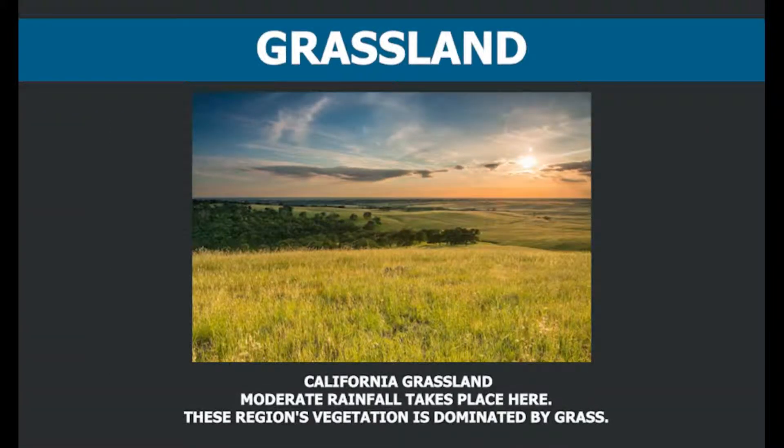There are areas on Earth where moderate rainfall takes place. In these regions, vegetation is dominated by grass. Such habitats are known as grassland habitat.